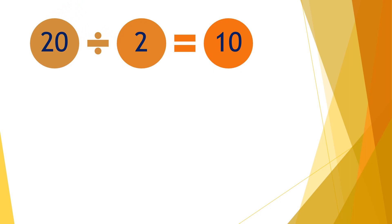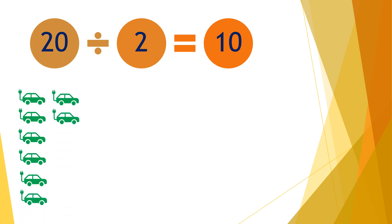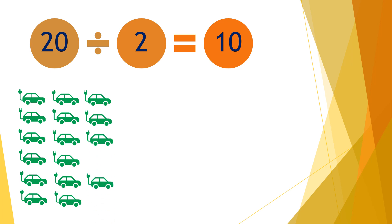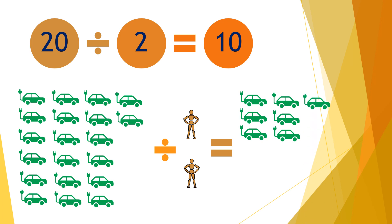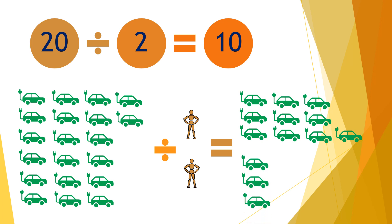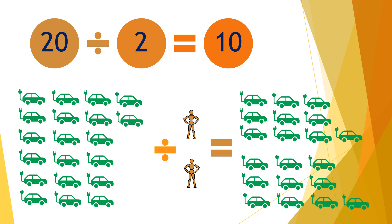Moving on to the next question: twenty divided by two equals ten. So if you have twenty cars and divide them by two people, each person will receive ten cars — one through ten for each person.